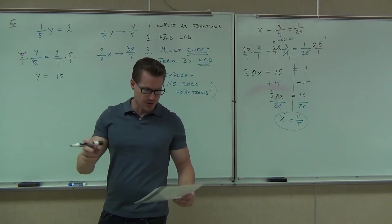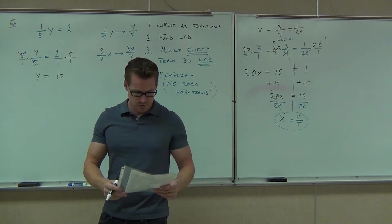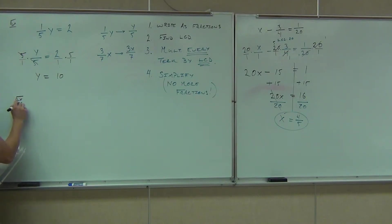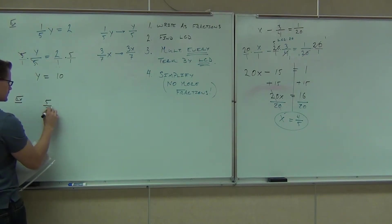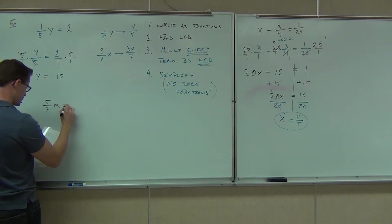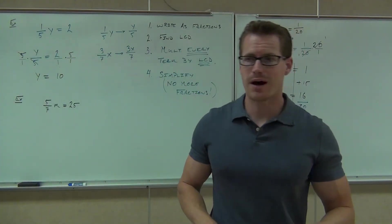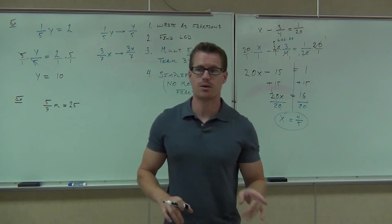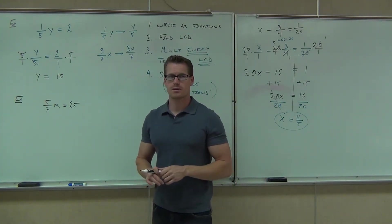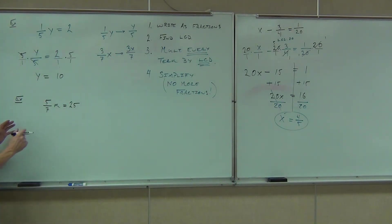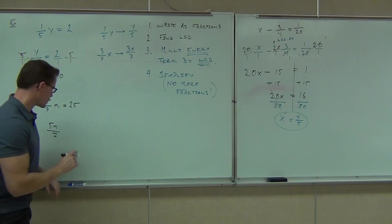We'll do a couple more together. I'll give you three to do on your own, and we'll start moving on. Five-sevenths M equals 25. Can you tell me the first thing you might want to do with this problem? Yeah, let's do that. Let's make this into one fraction. You see, right now, the five-sevenths M could be a little difficult to deal with. So, I'm going to translate that to five M over seven. You can take the variable, put it on the top of your fraction, and that's appropriate. Equals 25.